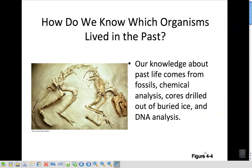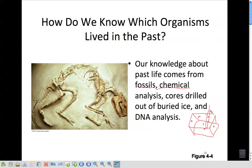So how do we know organisms lived in the past? We have fossils, chemical analysis of things we've found, and cores drilled out of buried ice. When you have a cube of ice, you notice there are little holes — little spaces inside. Those are air pockets. If you drill into the ice, you can get into those air pockets, and they give us the atmosphere of the time when that ice was packed down. You can determine what kind of atmosphere existed at a given depth.